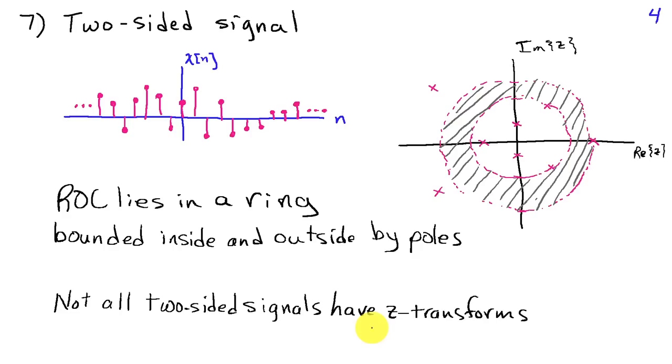The third case is if we have a two-sided signal. In other words, the signal extends in both directions. Then the ROC is going to look like a ring, and the ring is going to be bounded by poles. So we'll have a pole on the inside surface of the ring and a pole on the outside surface of the ring. We've seen several examples of this as well. The other thing we've noticed is that not all two-sided signals have Z transforms. There are some signals where there's no values of Z for which the Z transform converges.